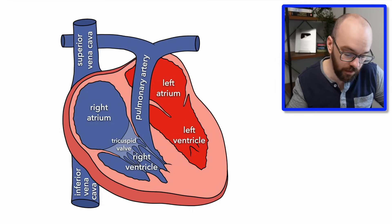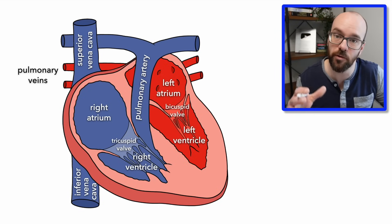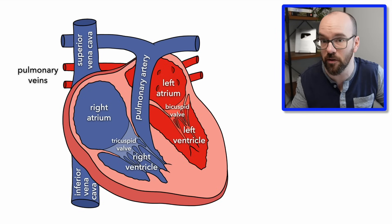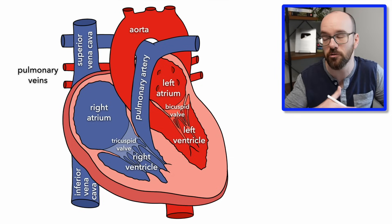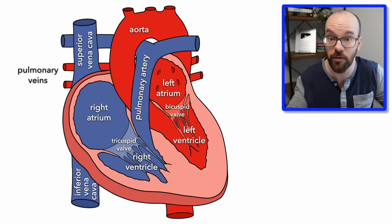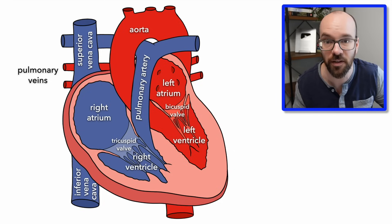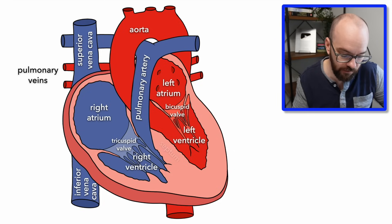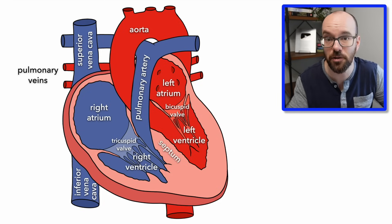The blood gets back to the heart through the pulmonary veins and goes into the left atrium. From the left atrium it passes through the bicuspid or mitral valve into the left ventricle, and the left ventricle pumps it very forcefully out through the aorta to travel throughout the rest of the body, delivering oxygen, nutrients, hormones, and everything else in our blood. In between the left and right sides is the septum, which divides the heart into those two halves.